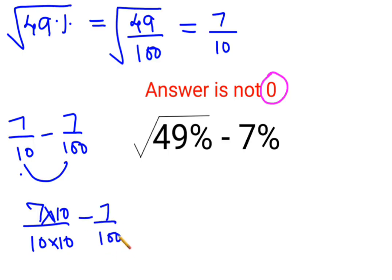So this comes out to be 70 upon 100 minus 7 upon 100. When you do the subtraction, now the denominators are same.